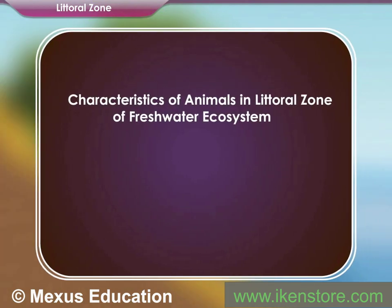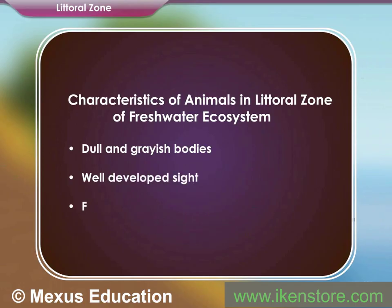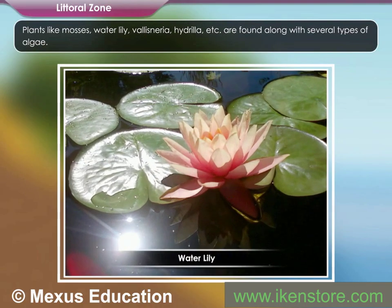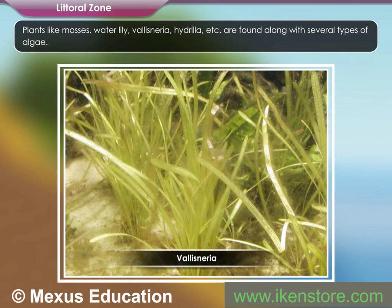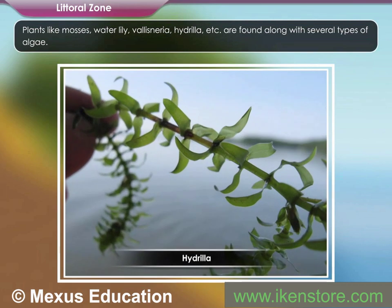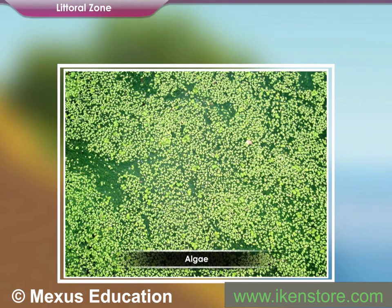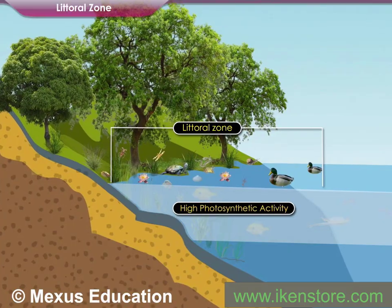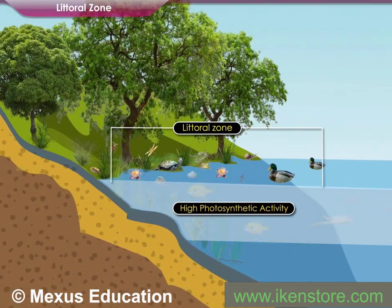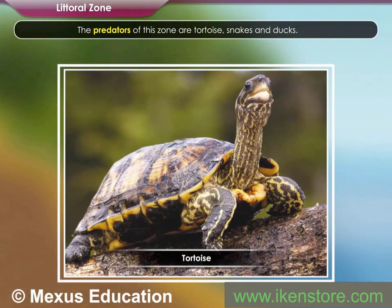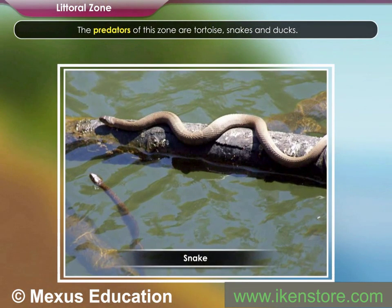The organisms in this zone have dull and grayish bodies and well-developed sight. They are fast swimmers. Plants like mosses, water lily, Vallisneria, hydrilla, etc. are found along with several types of algae. High photosynthetic activity occurs in this zone. The predators of this zone are tortoise, snakes, and ducks.